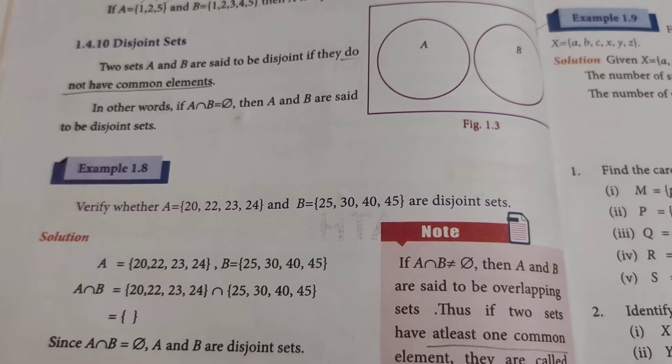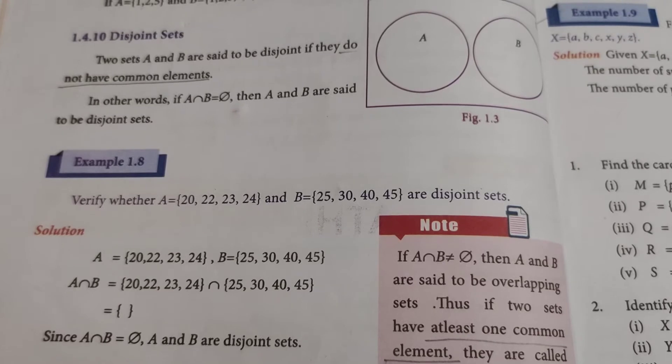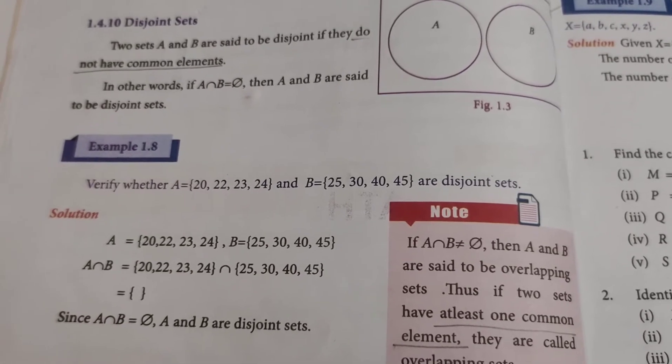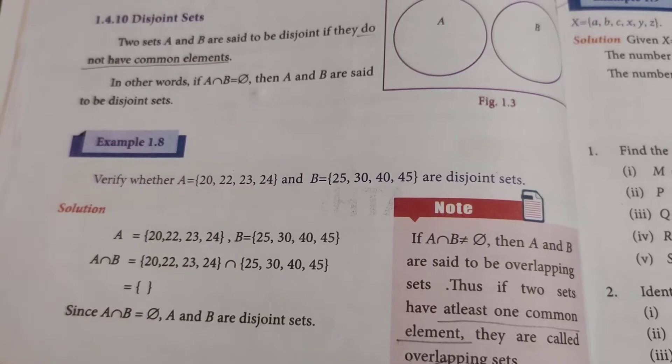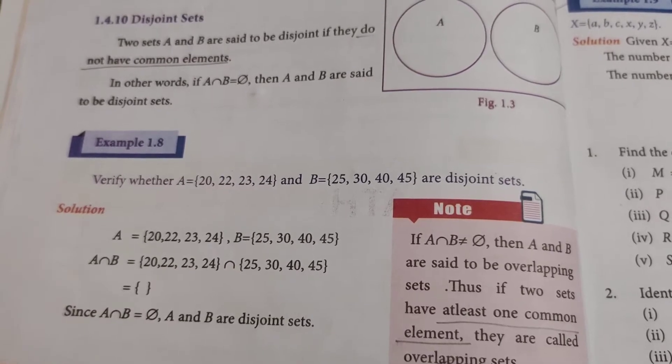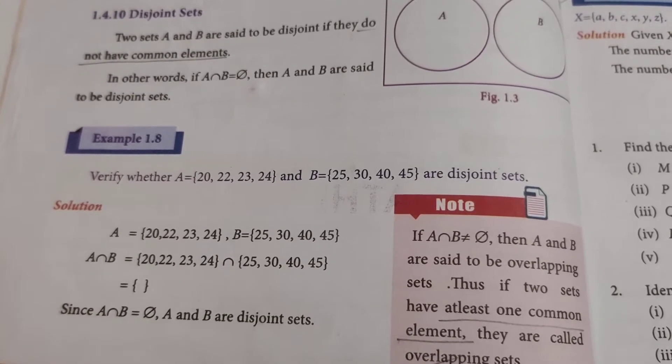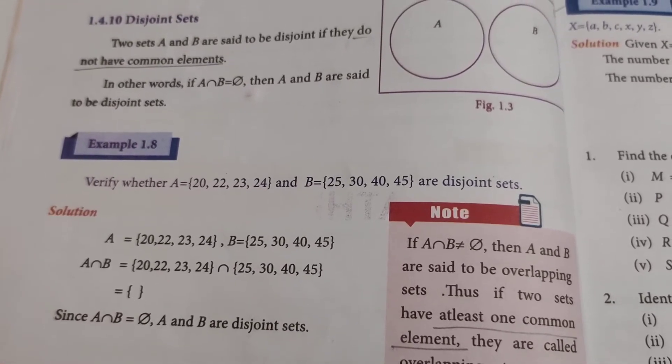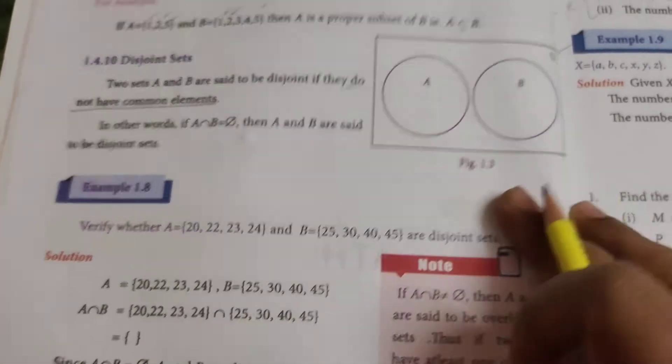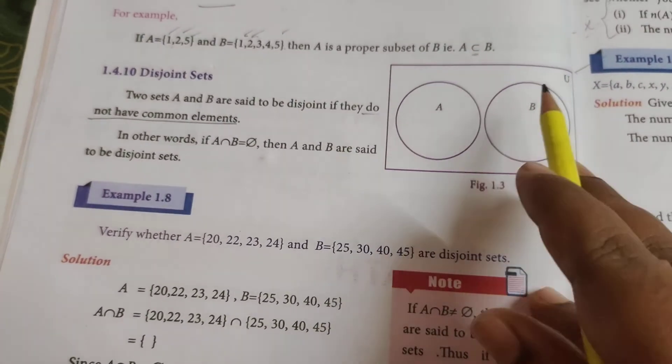The 10th type of set is disjoint sets. Disjoint itself gives the meaning—there is no joining, there is no connection. So two sets A and B are said to be disjoint if they do not have common elements.